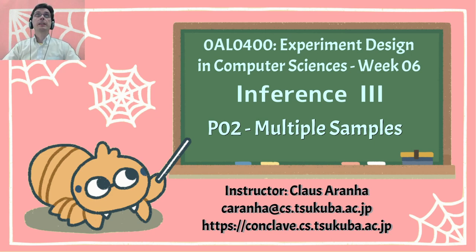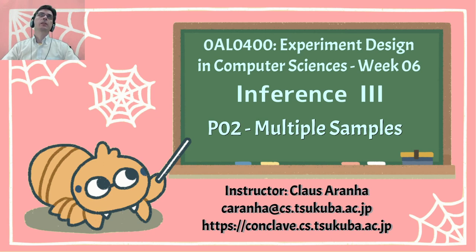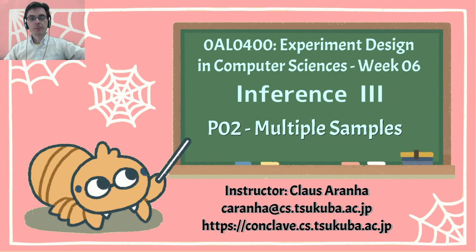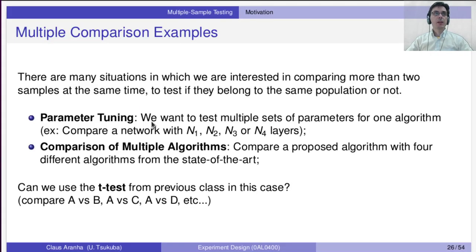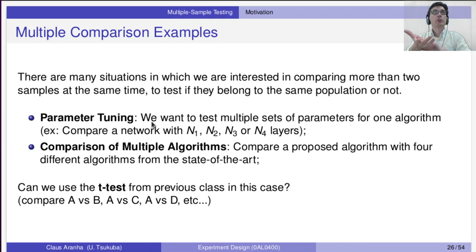Hello everyone. This is Experiment Designs in Computer Science, Week 6: Statistical Inference 3, Part 2 — Multiple Sample Testing. In this video, we're going to talk about when we want to compare more than two samples.